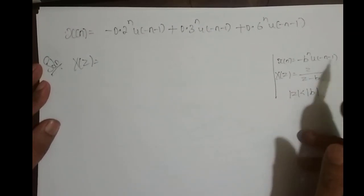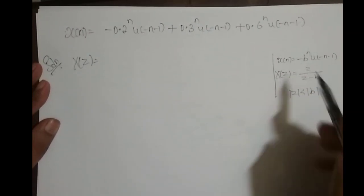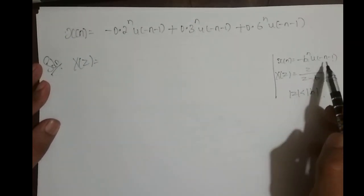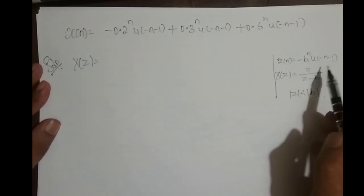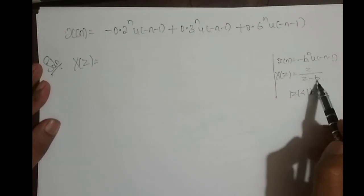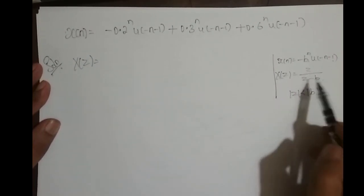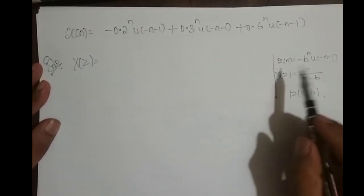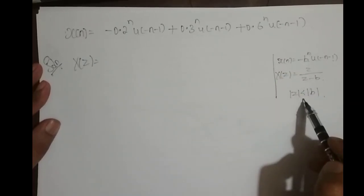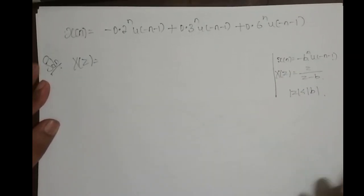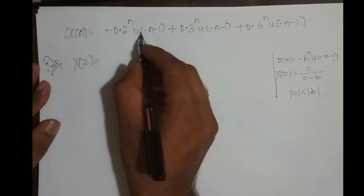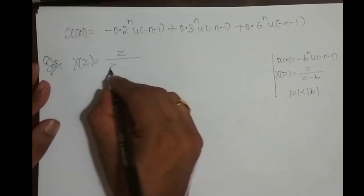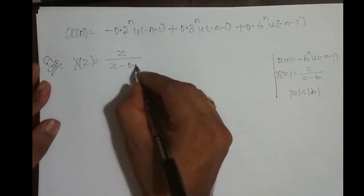The Z-transform of aⁿ u(n) and of −bⁿ u(−n − 1) are the same form — Z/(Z − a) — but the difference is in the ROC: for the right-sided it is outside the circle, for the left-sided it is inside the circle. So for the first term, −(0.2)ⁿ u(−n − 1): its Z-transform is Z/(Z − 0.2).